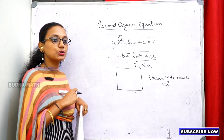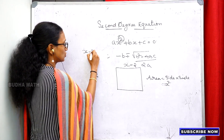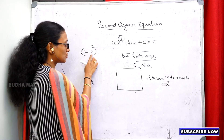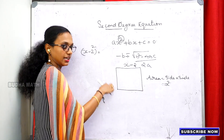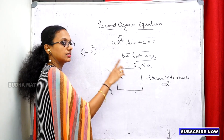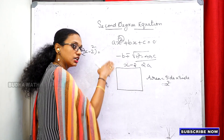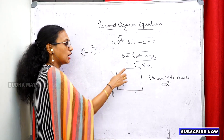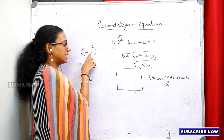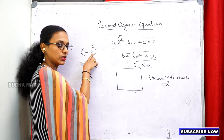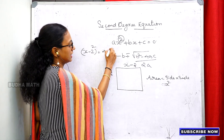How will x be found? x minus 2 squared equals 49. We move the square to the right-hand side as a root. So x minus 2 equals root of 49, which equals 7.